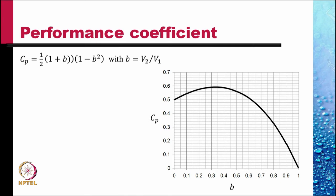This maximum value of Cp which occurs at a value of B equal to 0.33 is known as the Betz limit. Cp max is 0.5926 and B is equal to 0.33 and this gives you the optimum performance.